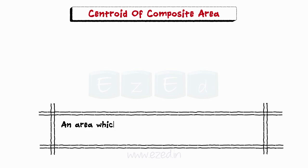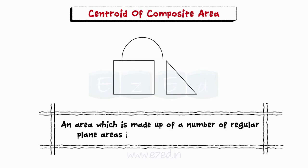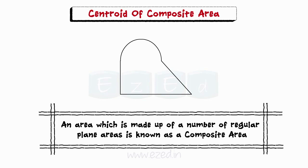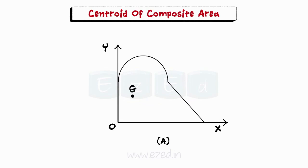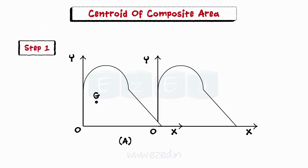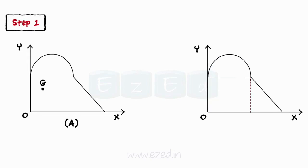Now we will learn to find the centroid of a composite area. An area which is made up of a number of regular plane areas is known as a composite area. To locate the centroid of a composite area as shown in diagram A, we use the following steps. Divide the composite area into regular plane areas — namely rectangle, semicircle, and a right-angled triangle as shown in figure B. The centroid of the rectangle, semicircle, and the triangle are marked using the formulae for regular plane areas. Mark the centroids g1, g2, g3 of all the regular areas as shown in figure B.